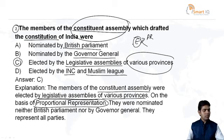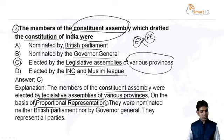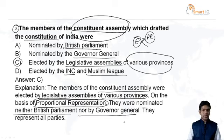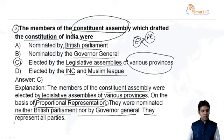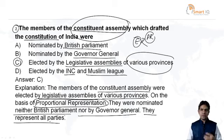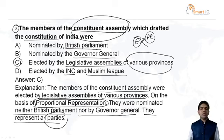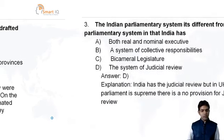Proportional representation is one of the systems of election. The constituent assembly members were not nominated by the British Parliament or the Governor General — they were elected through the various provinces. They represented all parties, not only the INC; it includes all parties like the Muslim League and others. They are represented from all parties.